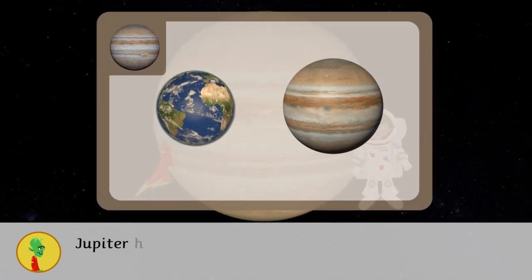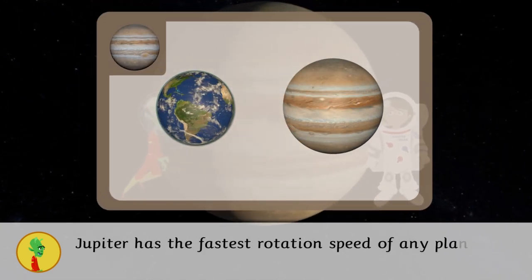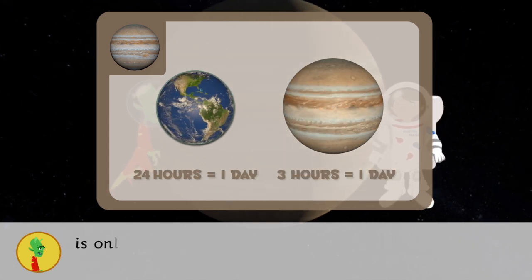Jupiter has the fastest rotation speed of any planet, and one day on Jupiter is only 10 hours on Earth.